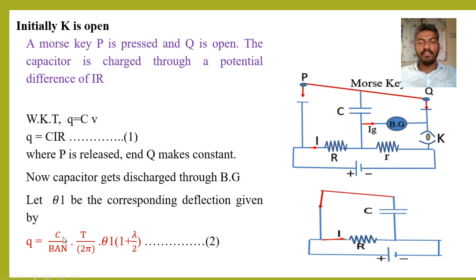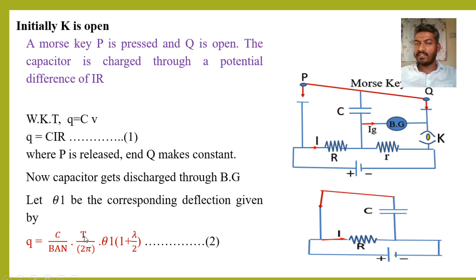In this expression, C is the couple per unit twist, B is the magnetic field, A is the area of the coil in the ballistic galvanometer, N is the number of turns in the coil, T is the time period of oscillation, 2π is a constant, and lambda is the logarithmic decrement. Let us take this as equation 2.